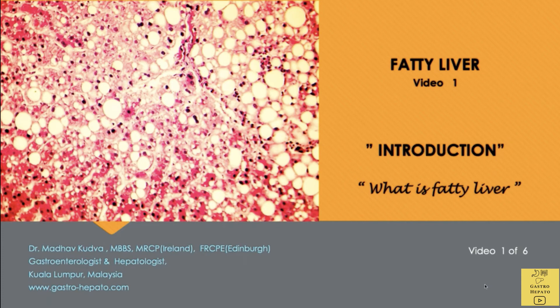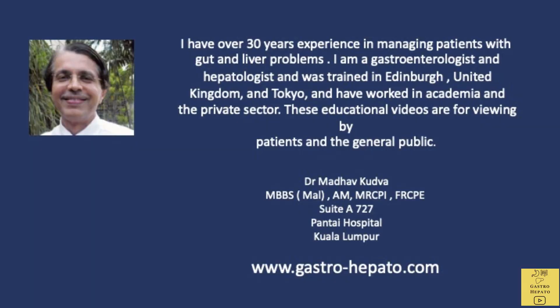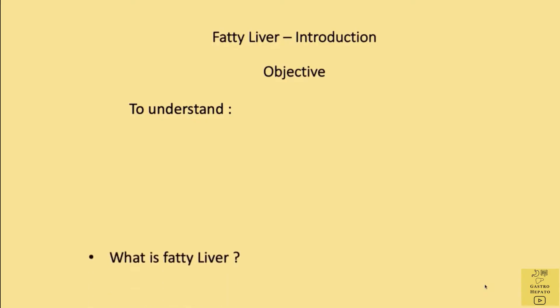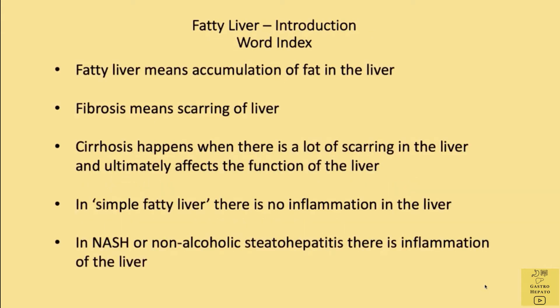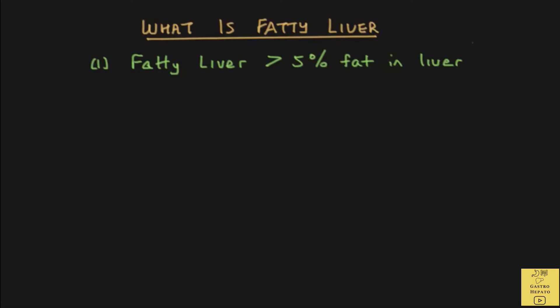This is the first video on fatty liver and it's an introduction. Fatty liver is the build up of too much fat in liver cells. It is normal to have a little bit of fat in the liver cells, but is considered abnormal and is called fatty liver when there is more than 5% fat in the liver.